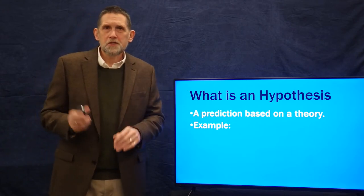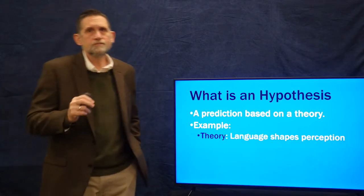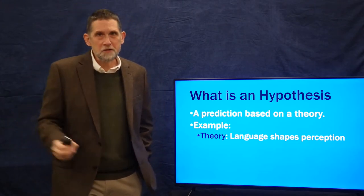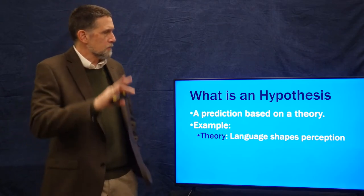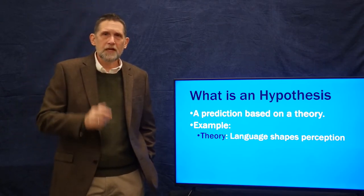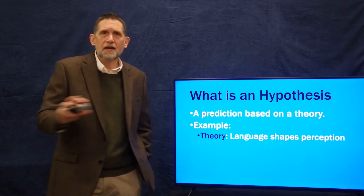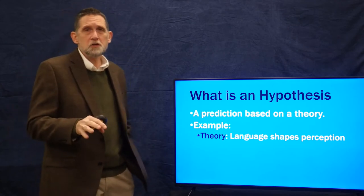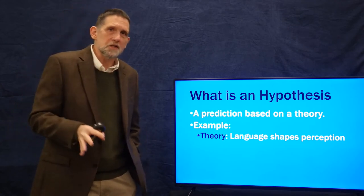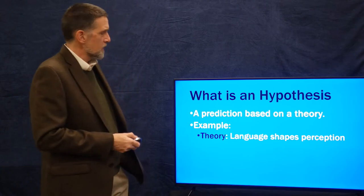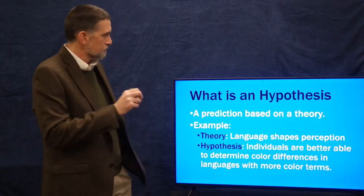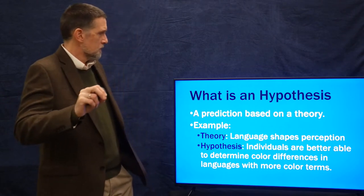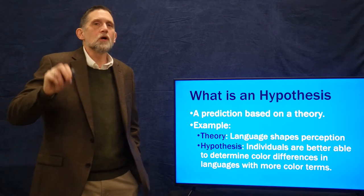Here's an example from anthropology. Theory: Language shapes perception. This is the Sapir-Whorf hypothesis, those of you who are doing linguistics. Language shapes perception. That's a theory. It has warrant. It has evidence. It's an established theory, if not a controversial and often discussed theory. And here might be a hypothesis based on it: that individuals are better able to distinguish colors in languages with more color terms.